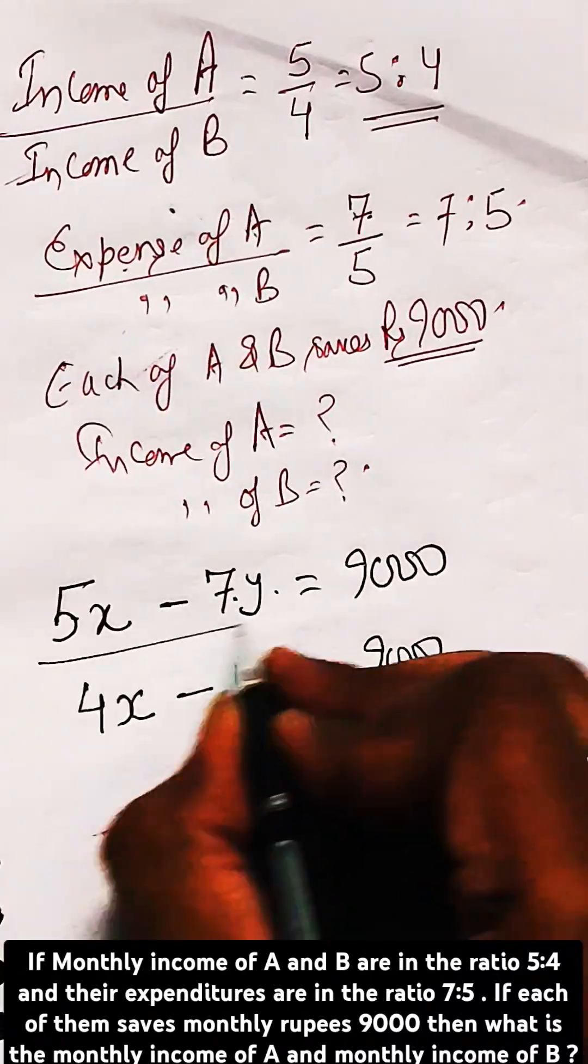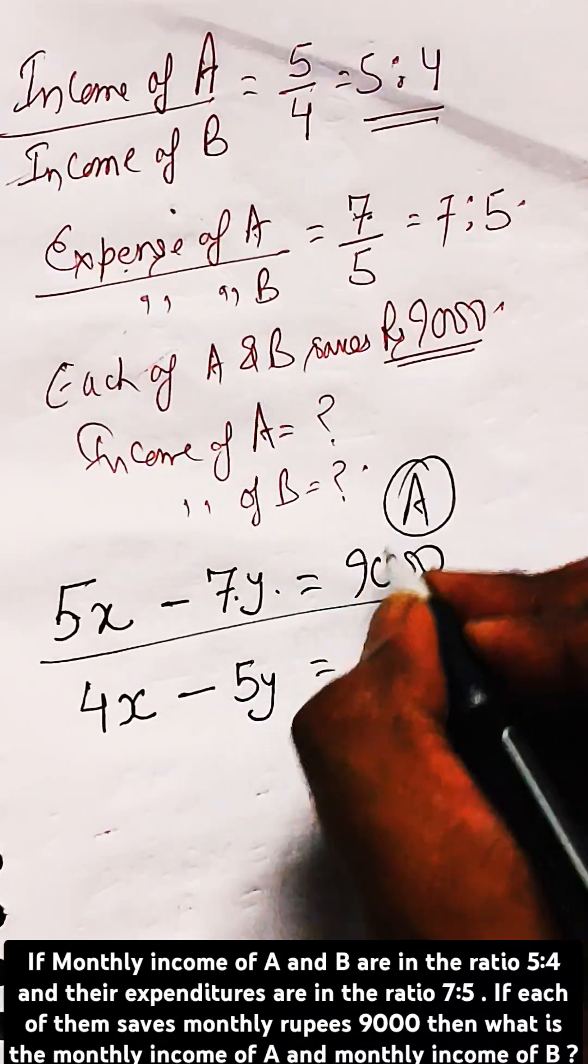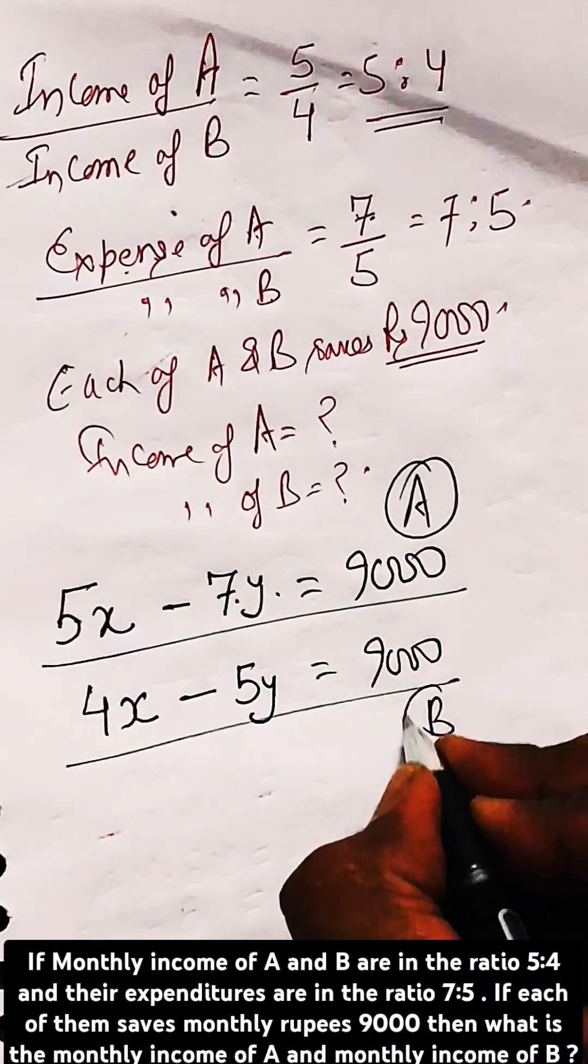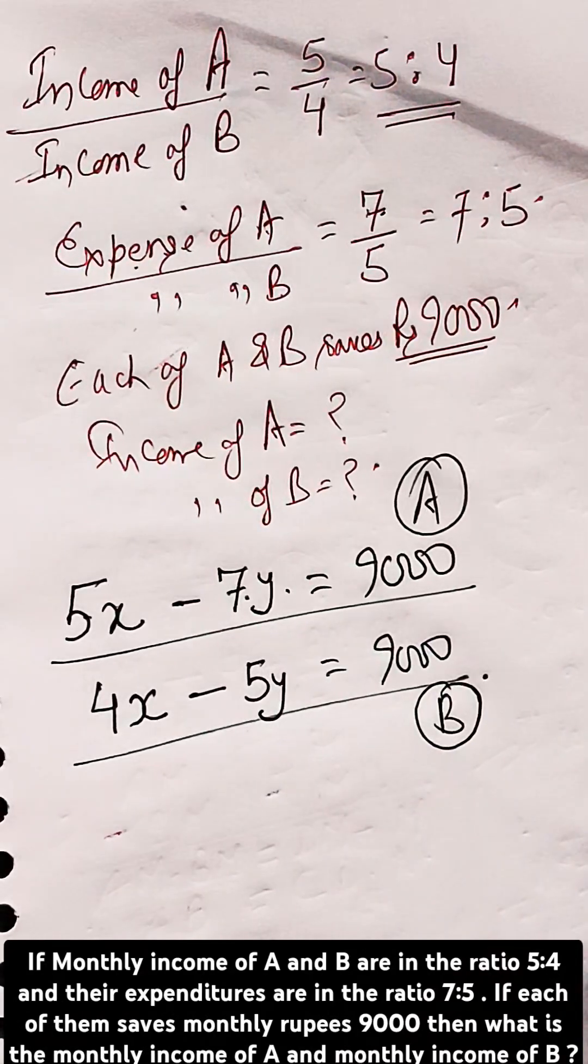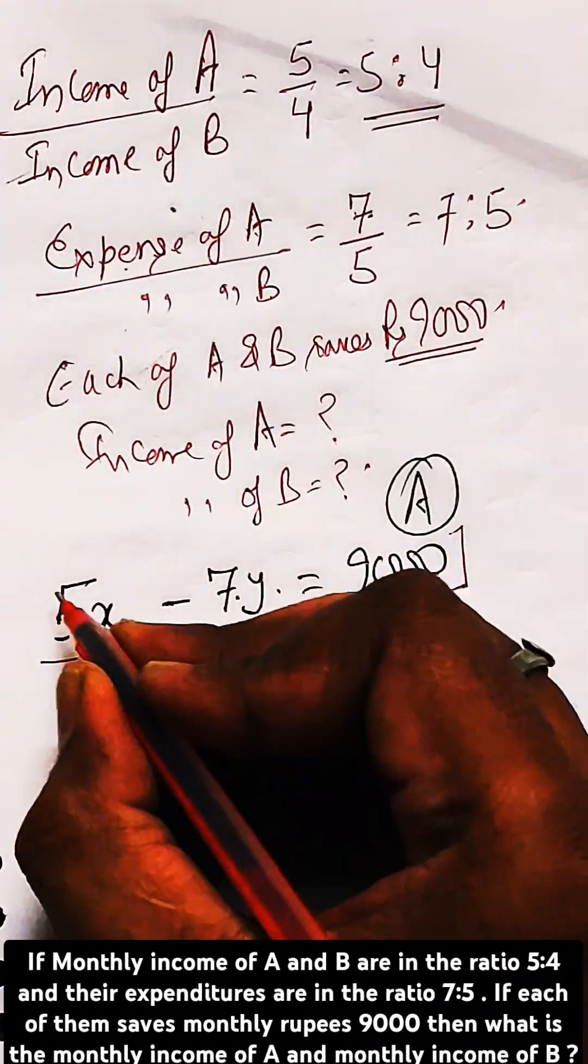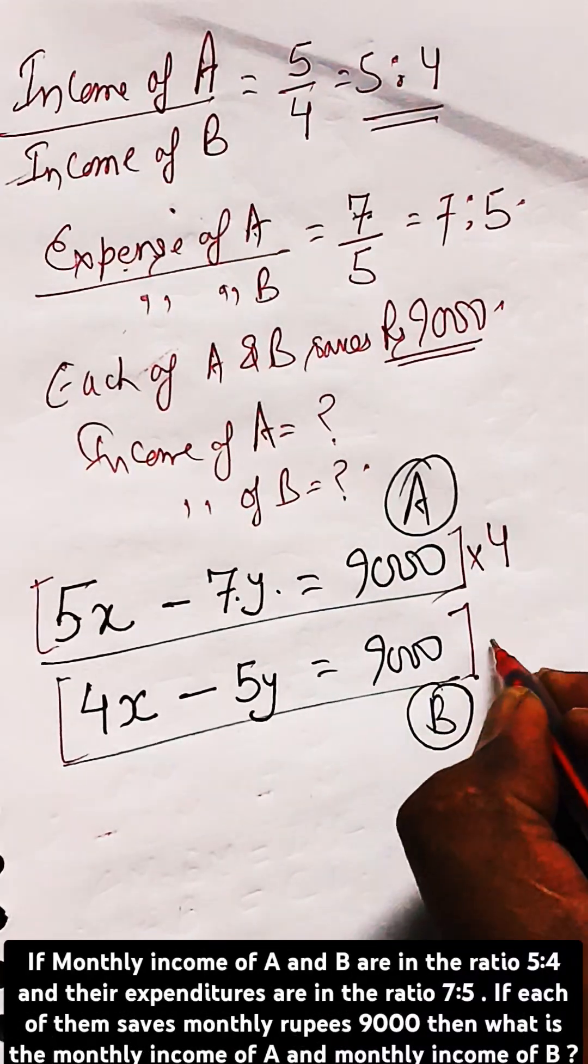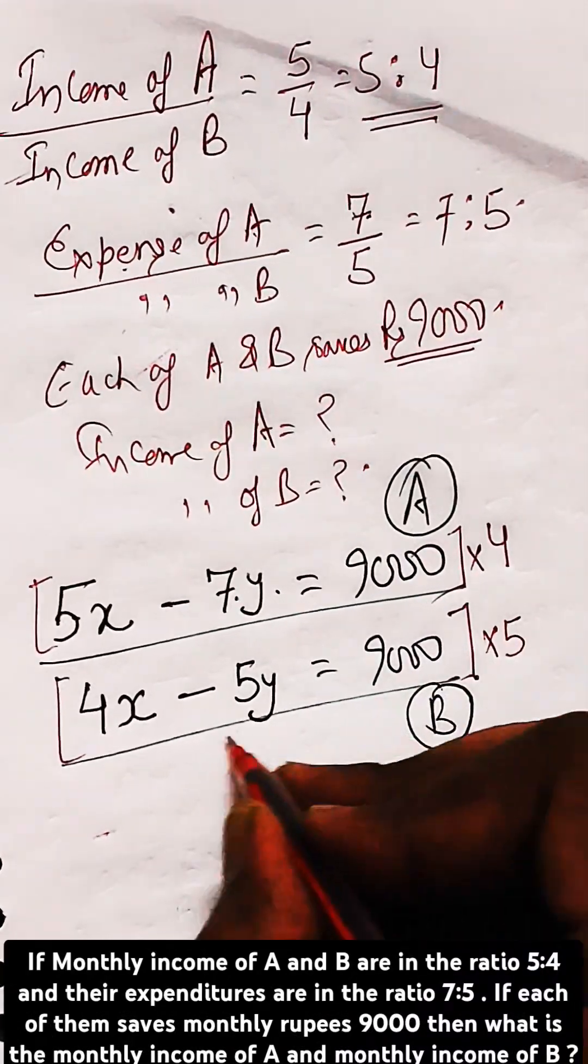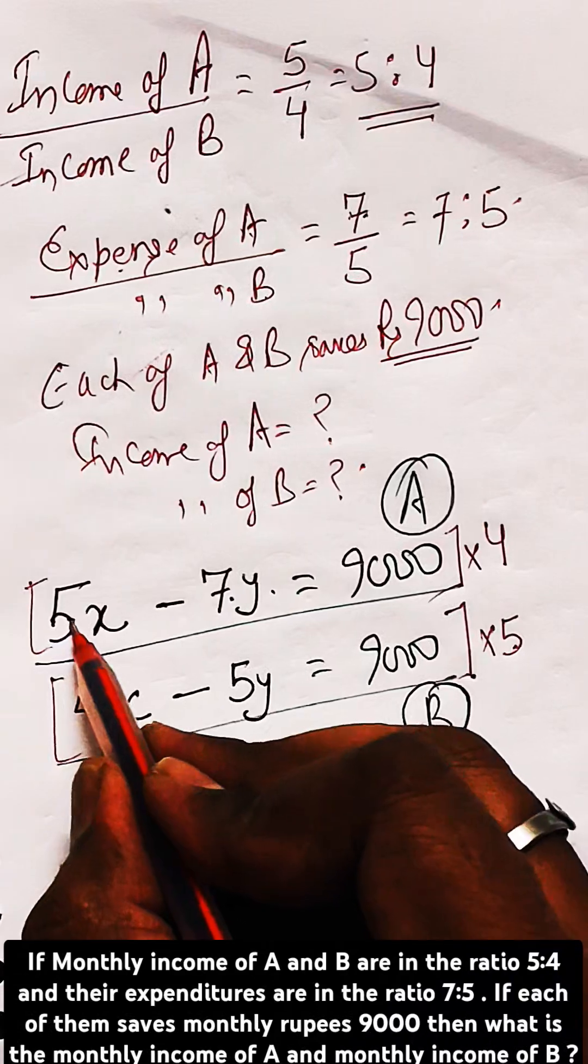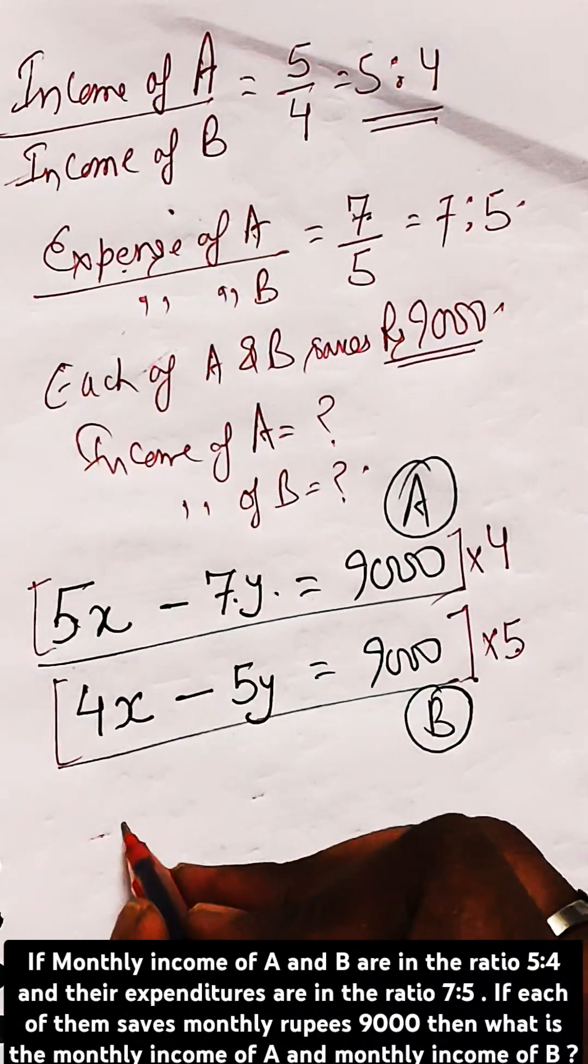For each of A and B. Now solve by method of elimination. Let us eliminate x first. Multiply the first equation by 4 and multiply the second equation by 5, in this way x will be eliminated.